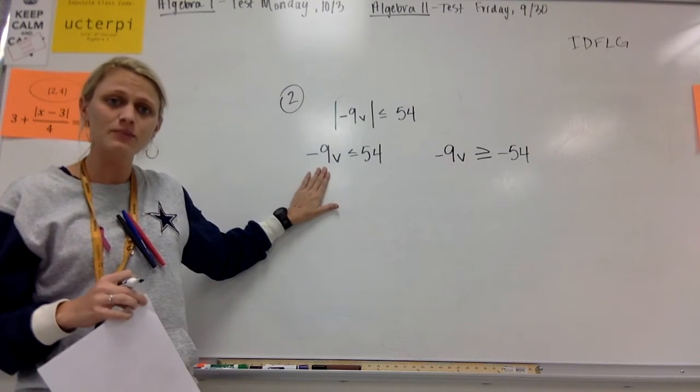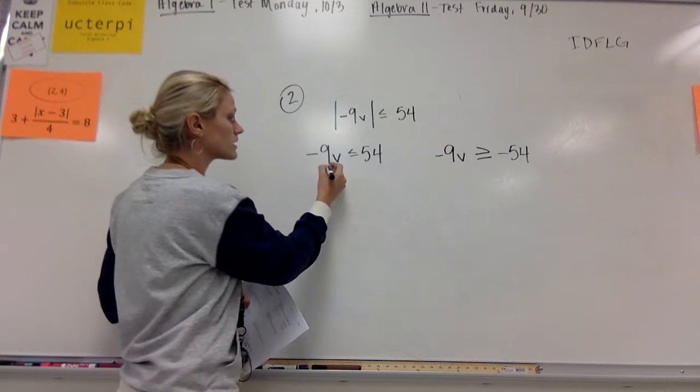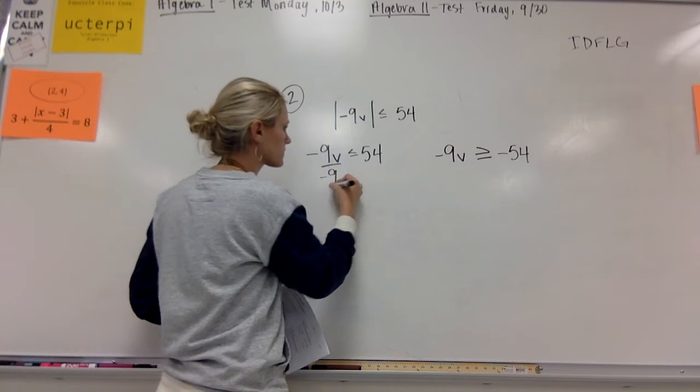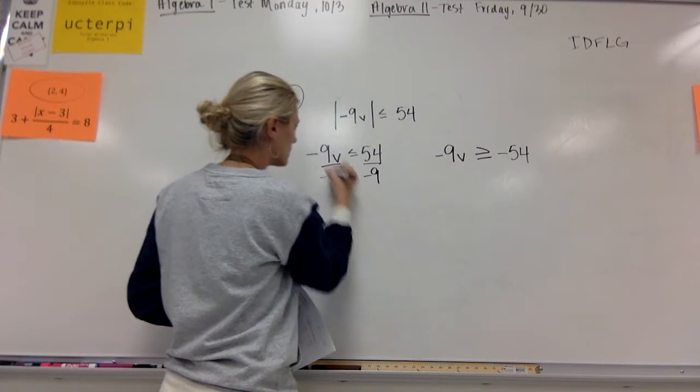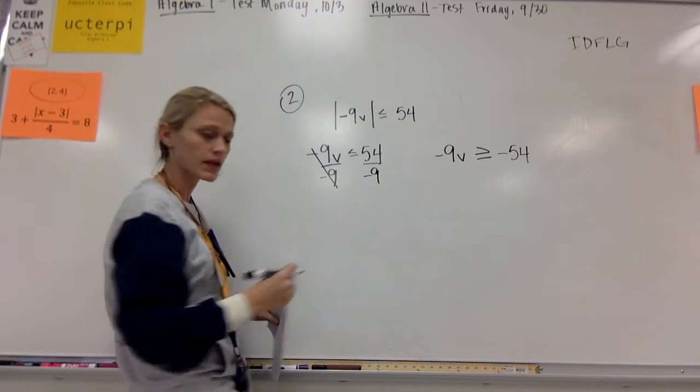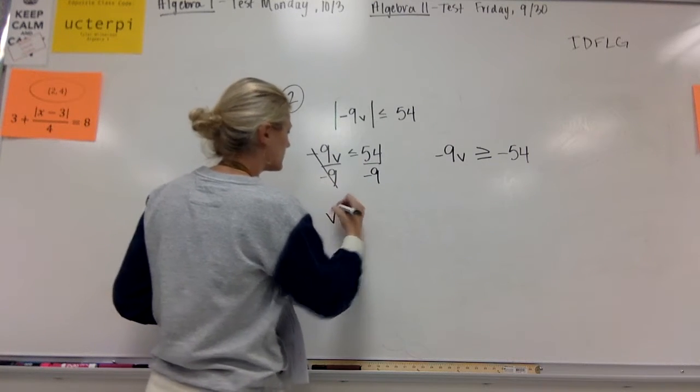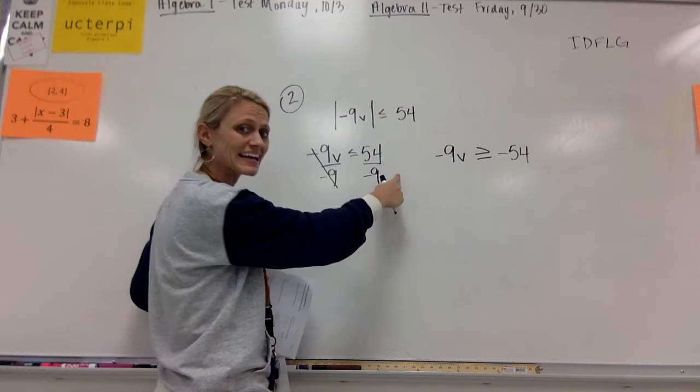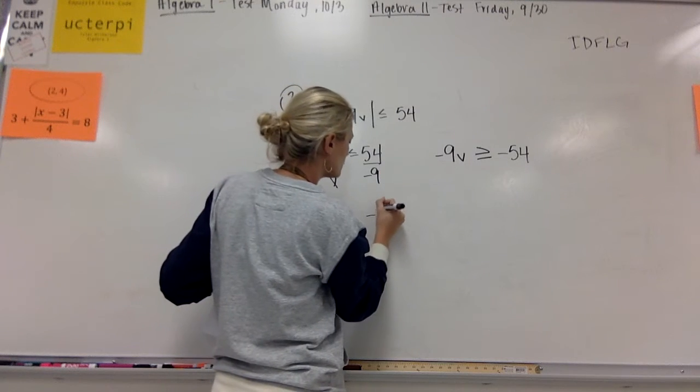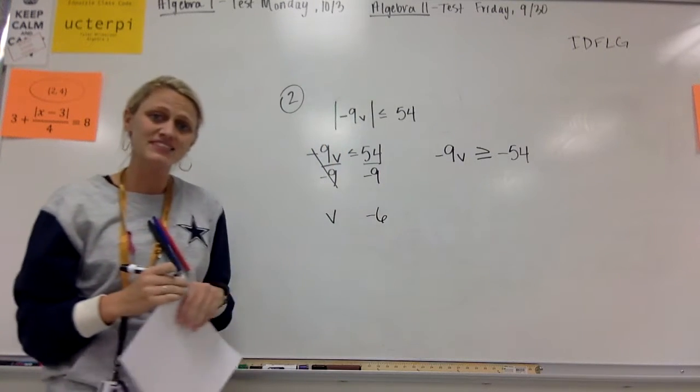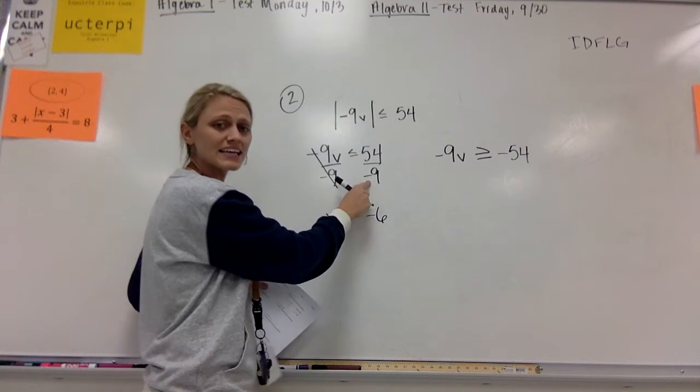I'm looking to get the V by itself. So I'm going to divide by negative 9 on each side. So I end up with V. A positive 54 divided by negative 9 is a negative 6.